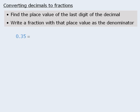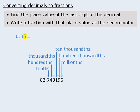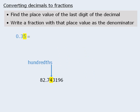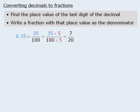To convert 0.35 to a fraction, we first find the place value of the last digit, which is 5. The 5 is in the hundredths position, so we remove the decimal point and write 35 in the numerator and 100 in the denominator. So 0.35 equals 35 over 100. We can then simplify by dividing top and bottom by 5 to get 7 over 20. So 0.35 equals the simplified fraction 7 twentieths.